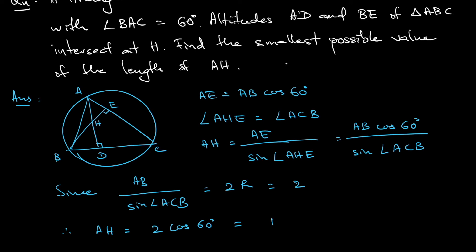So in fact, for this question, AH is always fixed at 1. The question asked for the smallest possible value. Because AH is always at 1, the smallest value is still 1. In fact, AH is always fixed as long as all the conditions in the question are set this way.